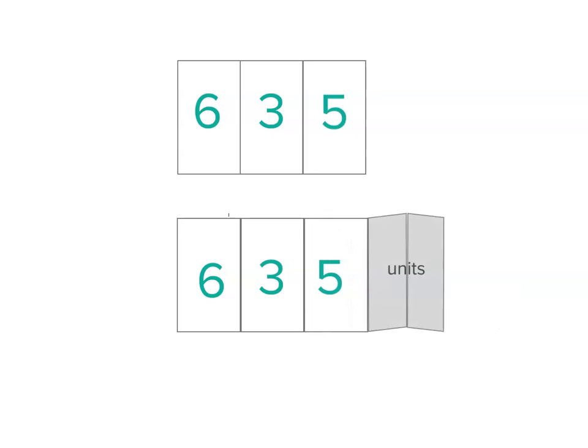You could actually think of 600 plus 30 plus 5 units and you'd have 635 units. Now you could actually get place value blocks and make your number different ways, or you can use a number expander like this one.